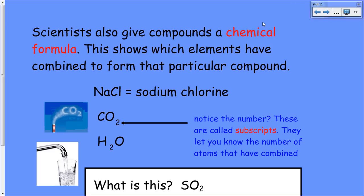Compounds are represented by chemical formulas. And sometimes we will see these numbers. These numbers are called subscripts, and they let us know the number of atoms that have been combined. So in sodium chloride or salt, you do not have a number, so you know that one atom of sodium and one atom of chlorine makes up the compound salt. In carbon dioxide, you have one atom of carbon and two of oxygen to make up carbon dioxide. In water, two atoms of hydrogen chemically combined with one atom of oxygen to create water.